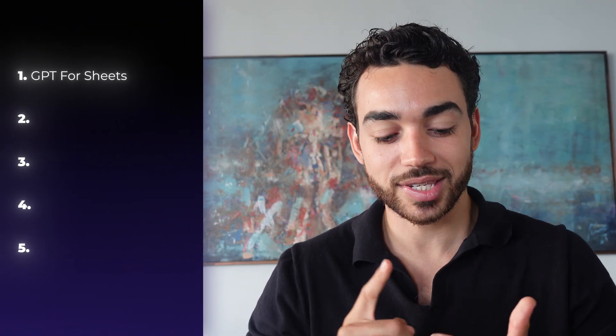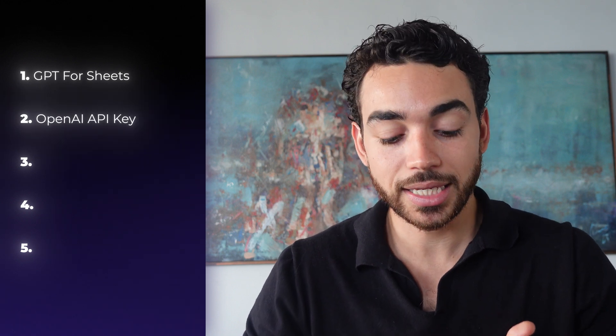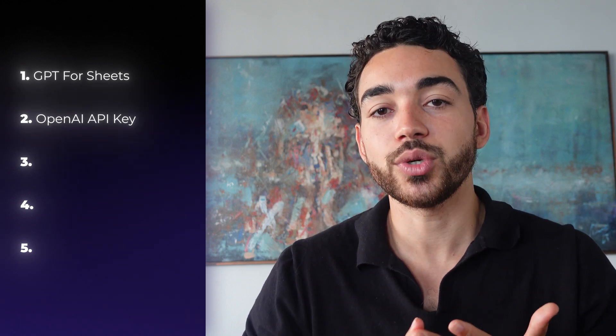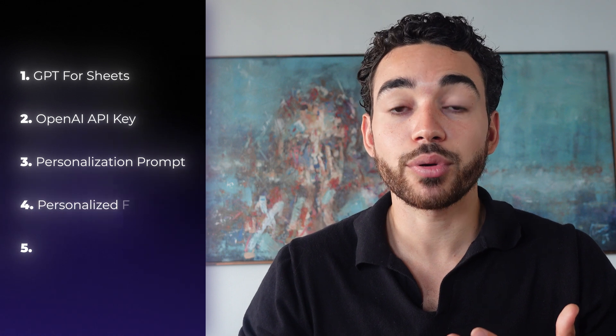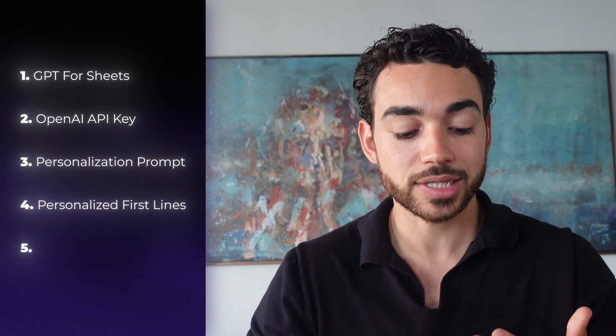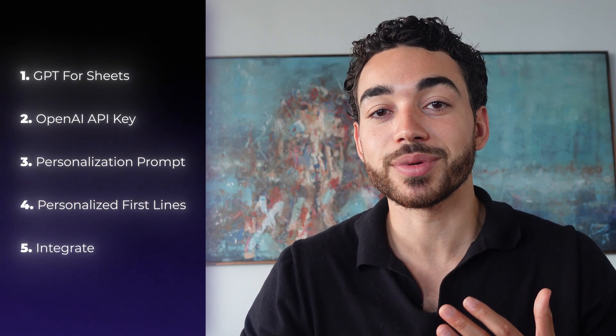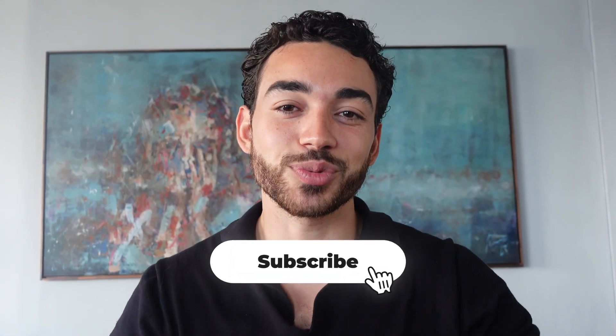So there you have it — a pretty much free method to personalize thousands of cold emails using ChatGPT and Google Sheets. To recap: number one, install GPT for Sheets; number two, get an OpenAI API key; number three, create your personalization prompt — link in the description; number four, generate personalized first lines for each prospect; and number five, integrate with your email sending tool. I'll leave a link for MailScale and the personalization prompt in the description below. If you found this valuable, hit subscribe and I'll see you in the next one.